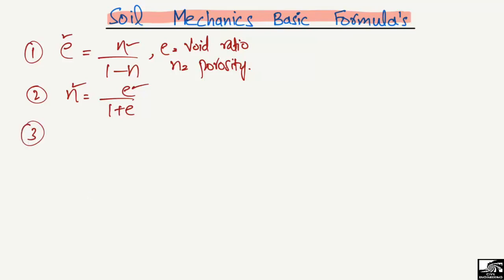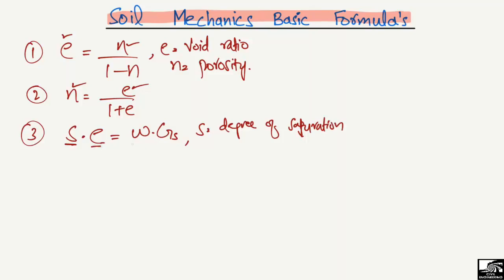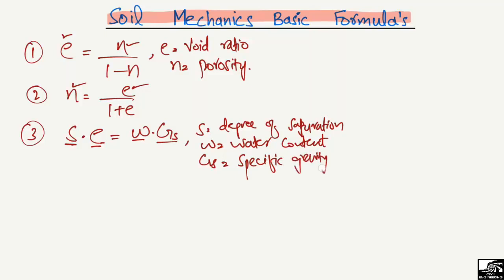The third formula is: the degree of saturation multiplied by the void ratio equals the water content multiplied by the specific gravity, i.e., S·e = w·Gs. Here S is the degree of saturation, e is the void ratio, w is the water content, and Gs is the specific gravity of the soil. This is one of the basic and most useful formulas in soil mechanics. If you want to find the degree of saturation, just rearrange by shifting the void ratio to the right side.